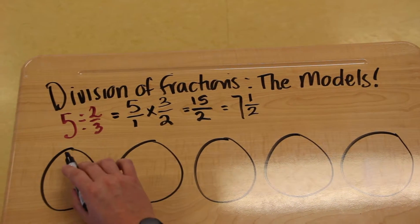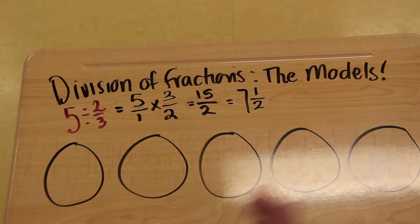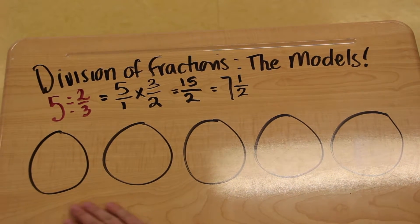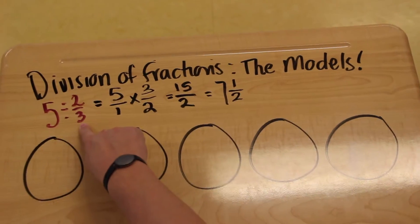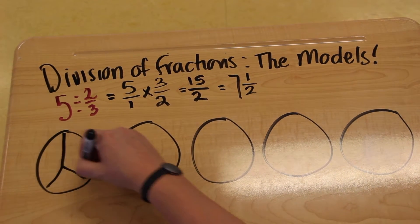If we have 5 wholes and we divide them into 2 thirds, what will we have? So once we have our 5s, we're going to cut them all into pieces that are represented by our denominator. So I'm going to divide each one of these circles into 2 thirds.